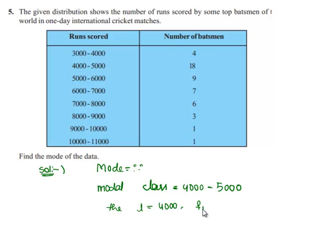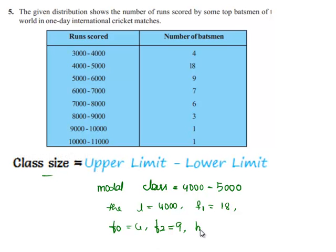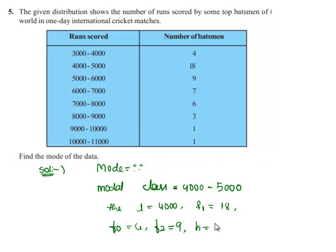The frequency of the modal class will be 18, the preceding frequency, that is above 18, it is 4. The succeeding frequency, it is after the frequency of the modal class, that is 9. And the class size, it is the difference between the interval limits, it is 5000 minus 4000, it is 1000.